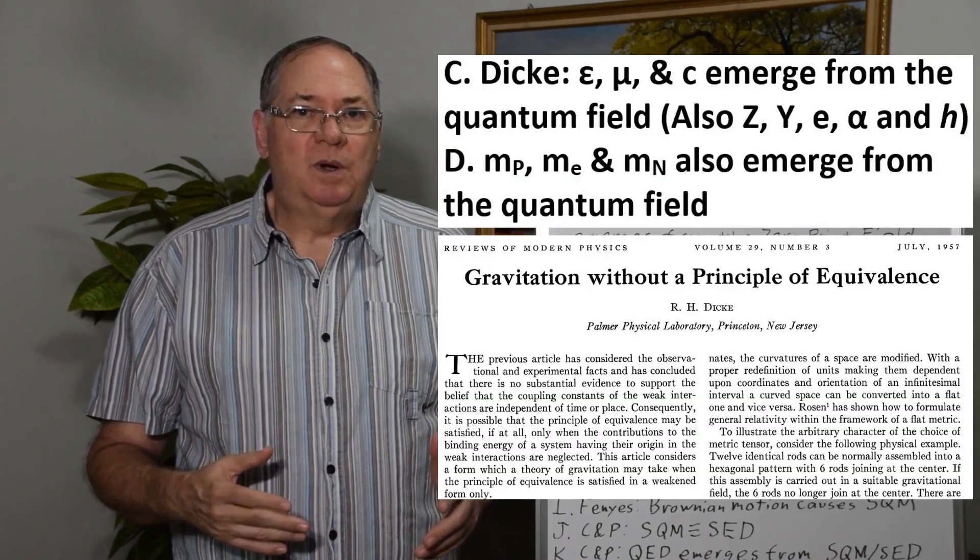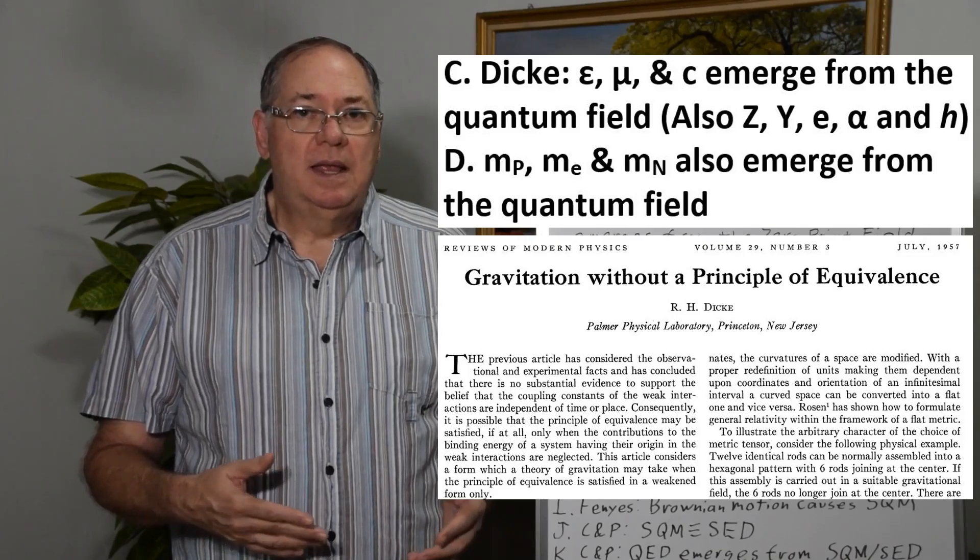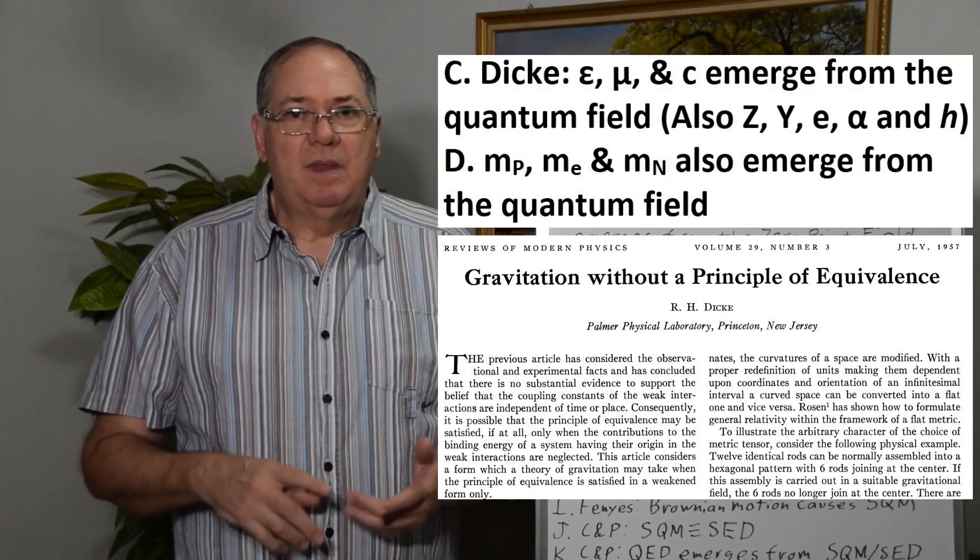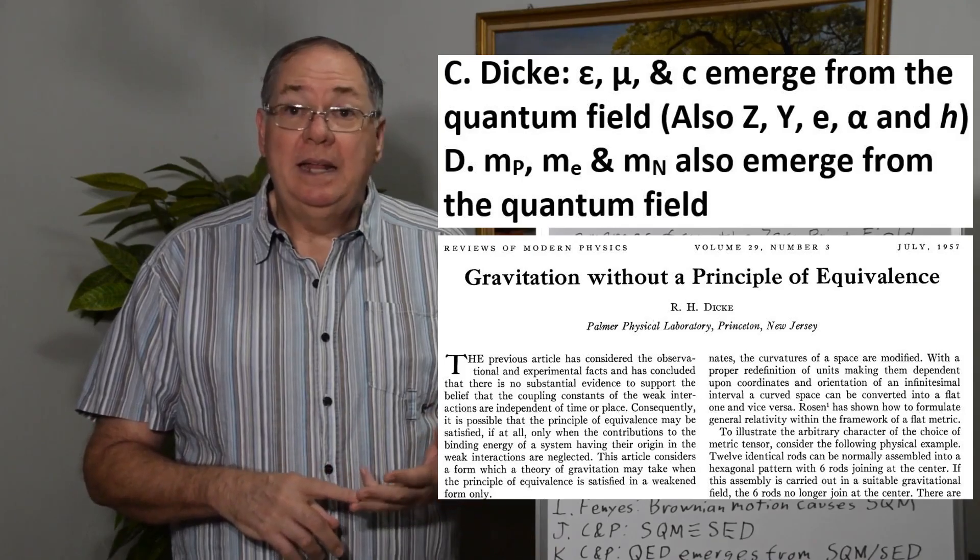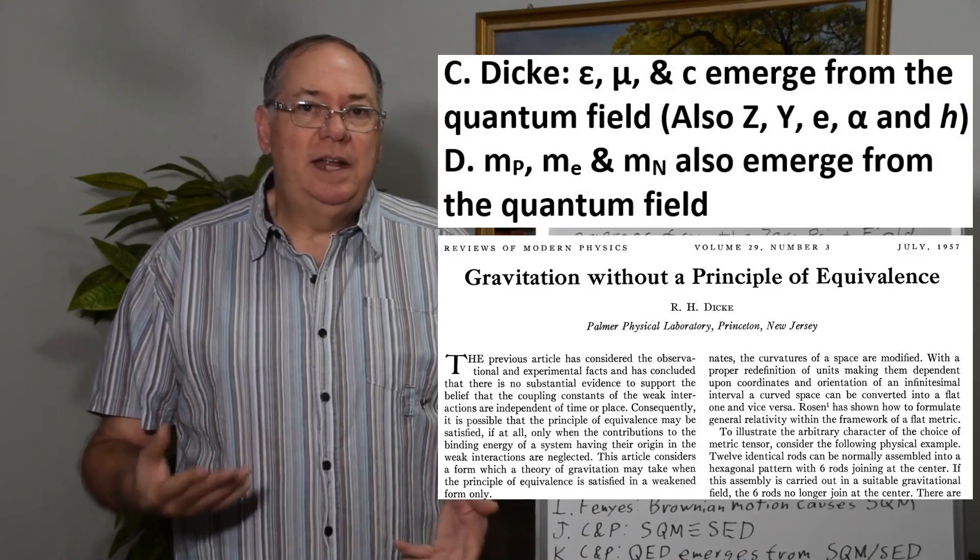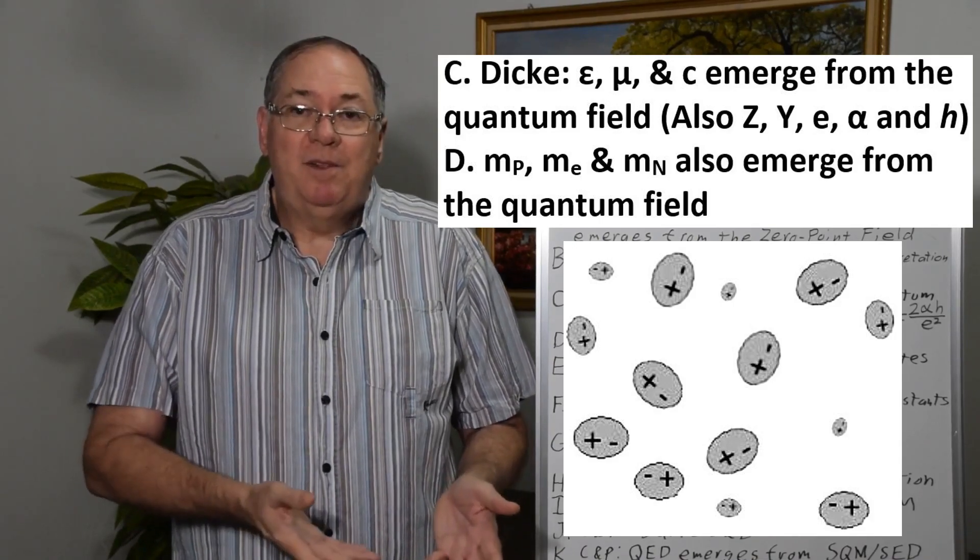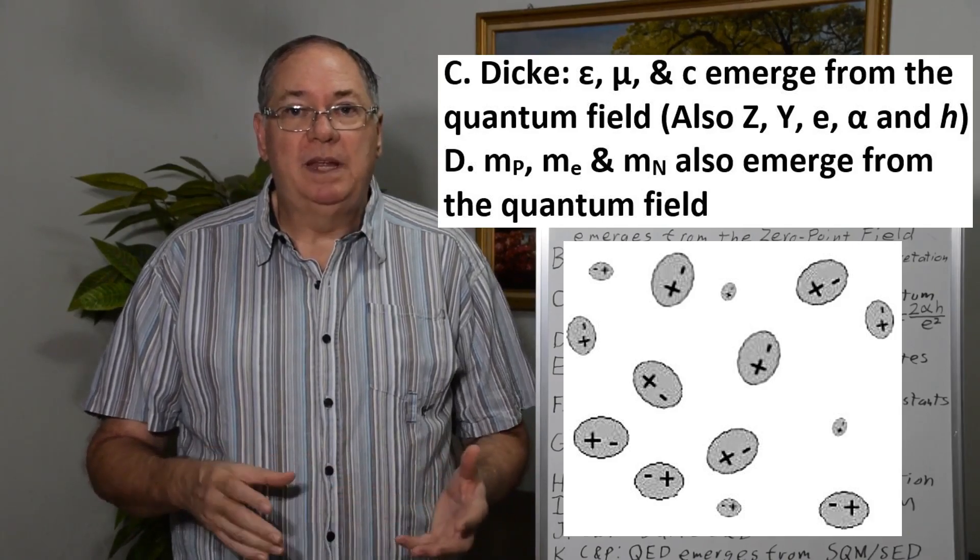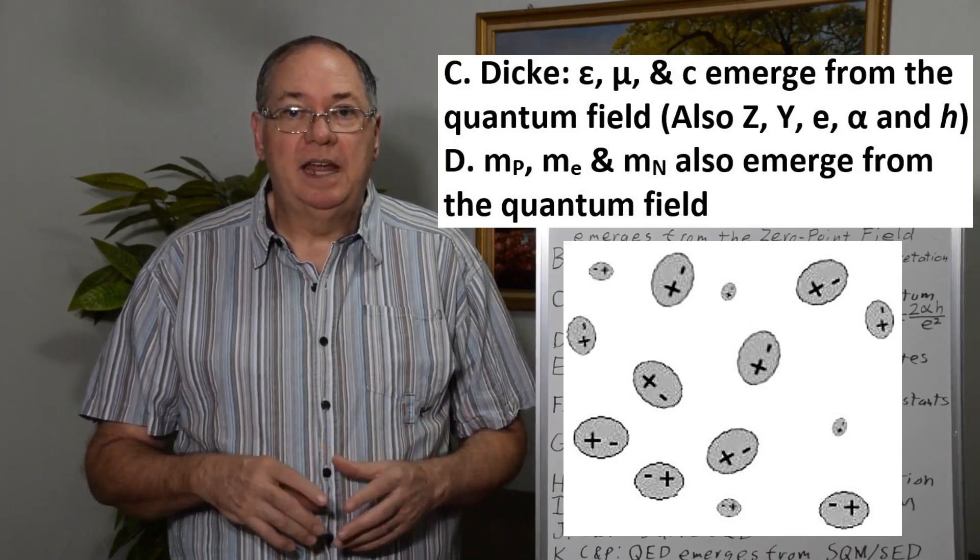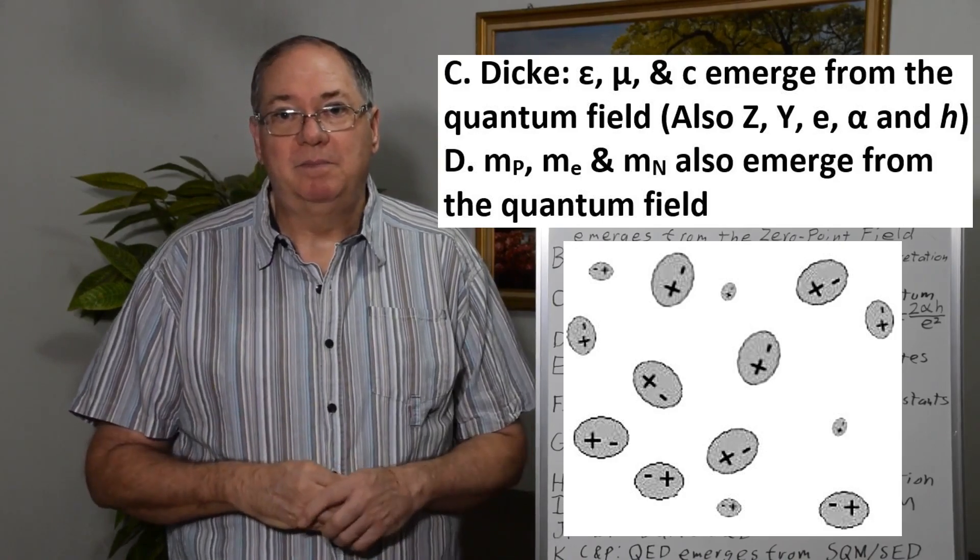As I've talked about before, if we look at how electrodynamics and quantum electrodynamics emerge, Dicke made the point in his 1957 paper that I'll link that the permittivity, permeability, and consequently the speed of light are emergent properties of a polarizable medium. There needs to be a polarizable medium, because if electromagnetic fields are real, you have to have something actually with dipoles in order to have electric and magnetic fields.